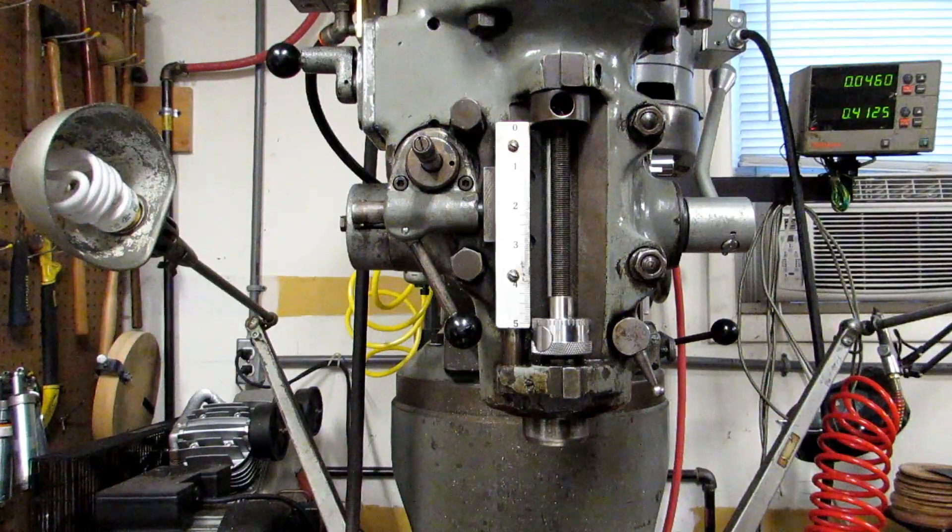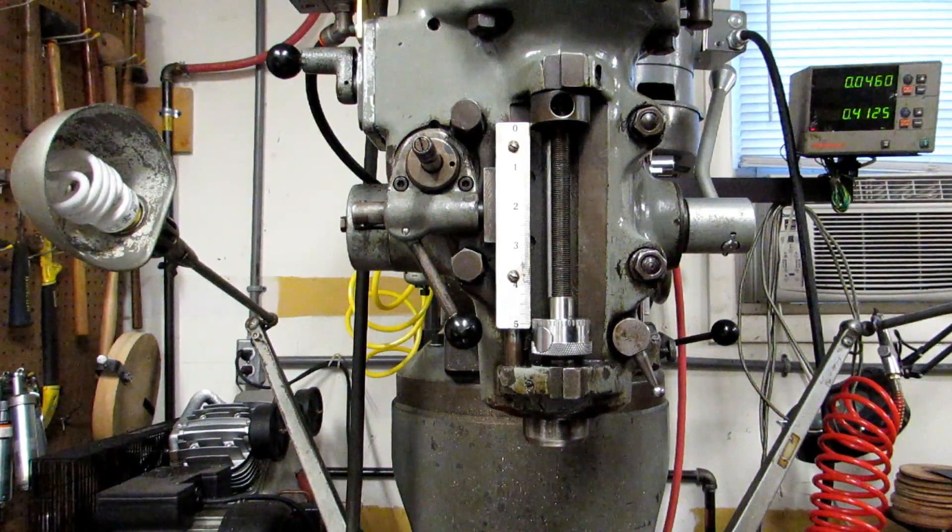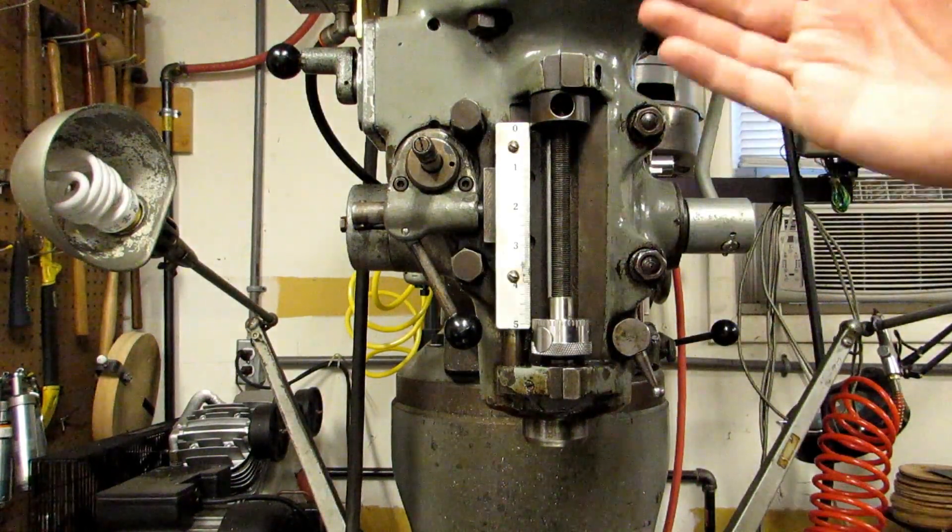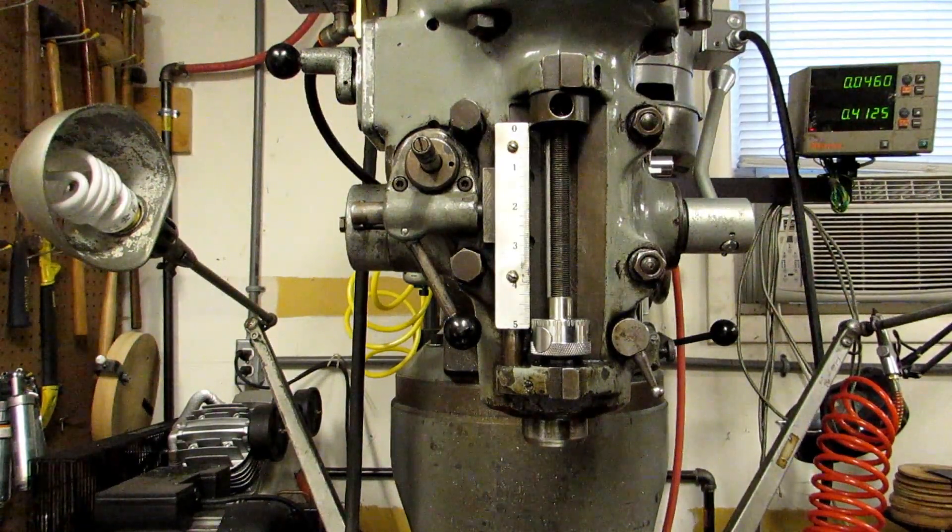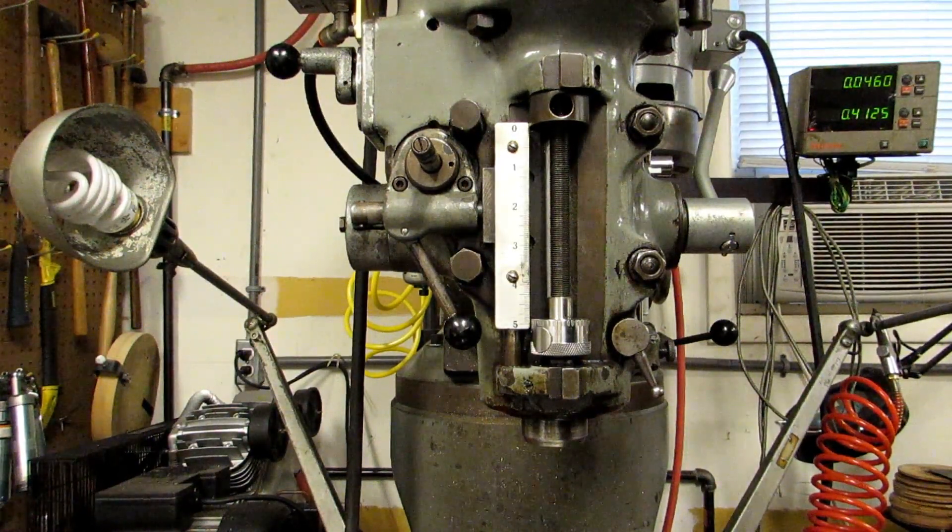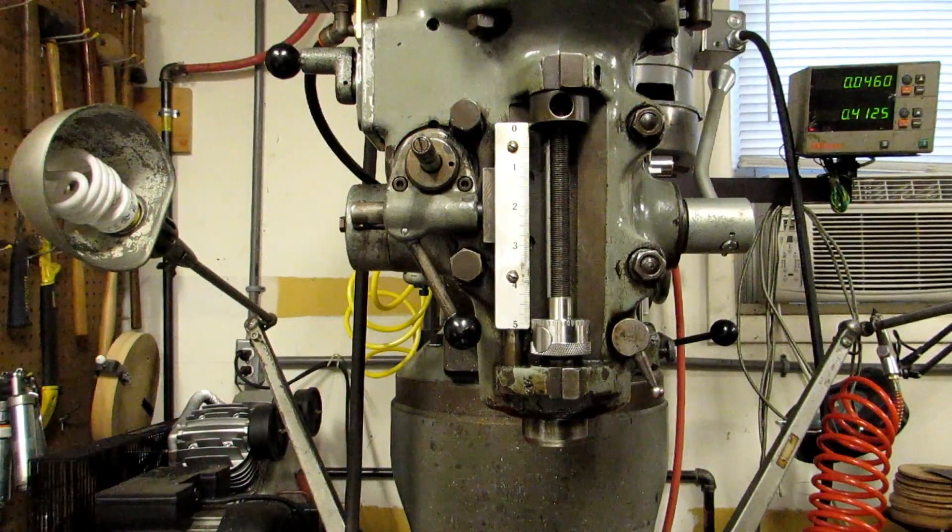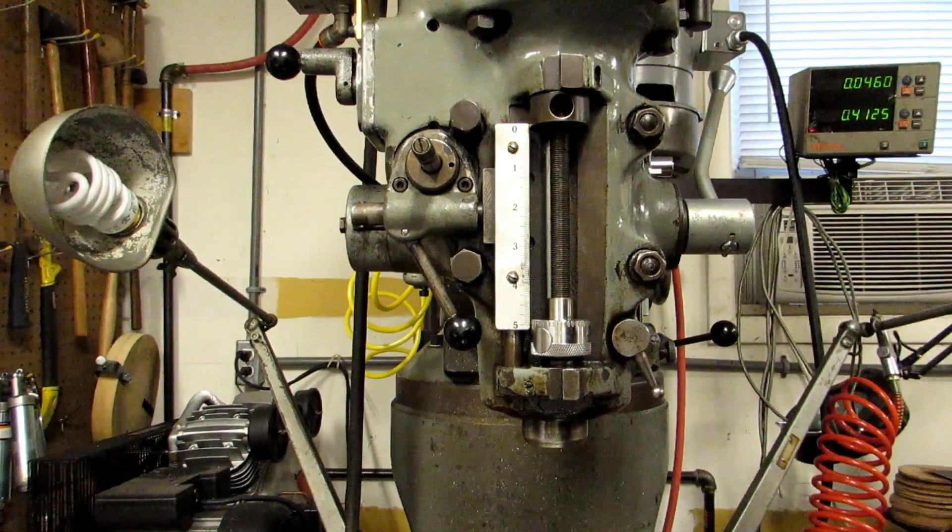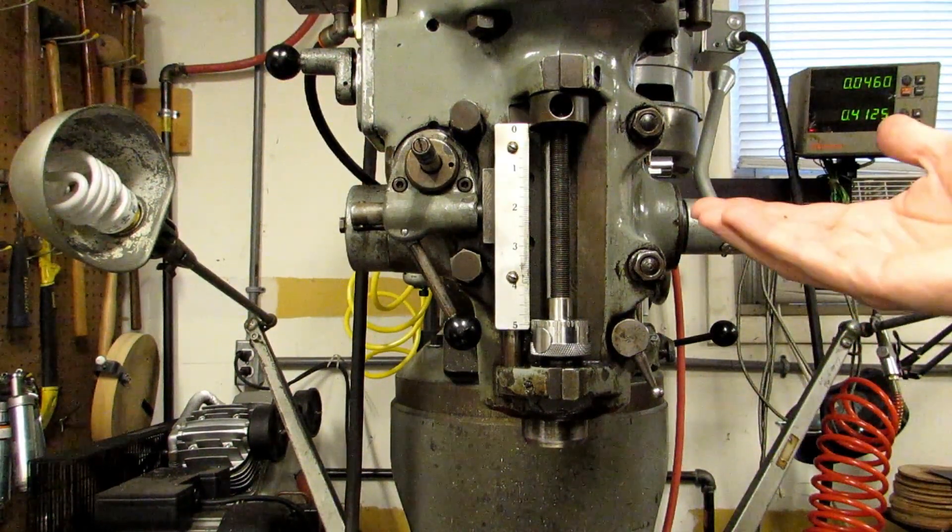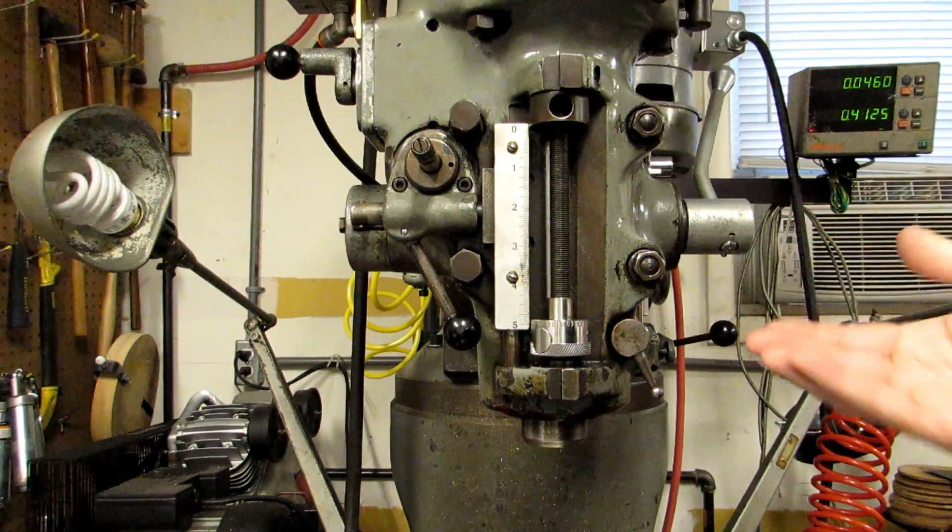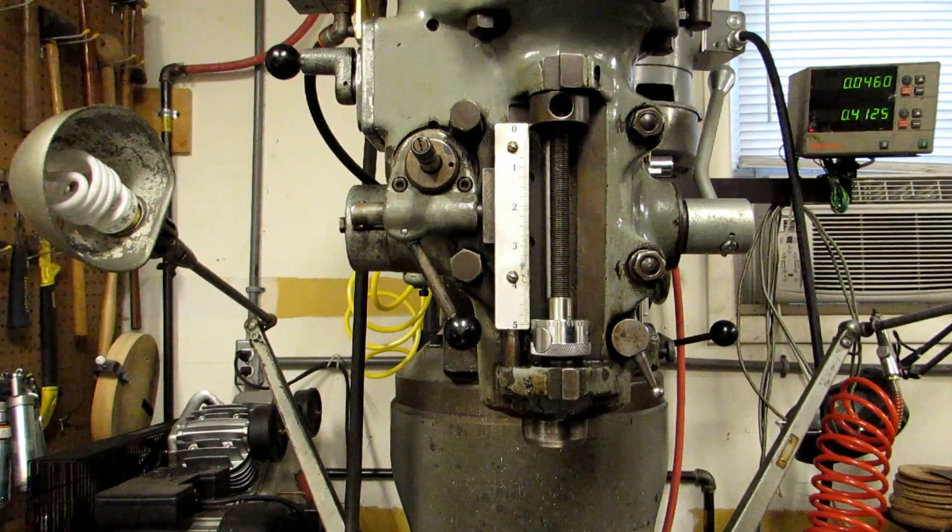Now I didn't get one of those for me it just doesn't seem as useful only having six inches of travel as opposed to 16 on the knee and I use my knee for depth adjustments a lot more than I use my quill. Generally I try to have my quill all the way up and locked when I'm milling anything so the only time I ever use it is when I'm drilling or boring a hole.